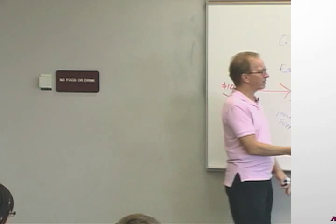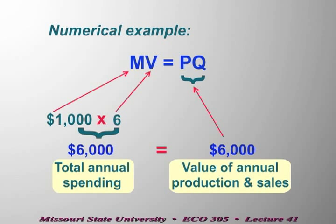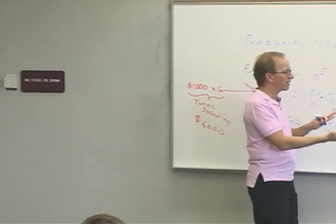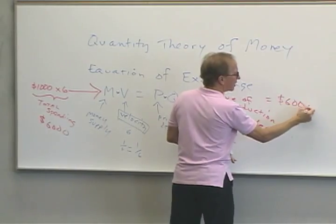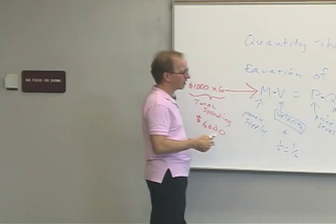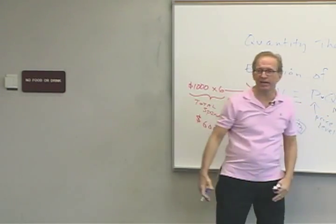P times Q is the value of all the stuff that gets produced or sold. If we go to all the cash registers in the United States, there are quantities of things and each thing has its own price. If $6,000 gets spent, $6,000 has to come through the cash registers. So this is really an identity — it must be true. All the dollars that get spent have to show up in the cash registers.